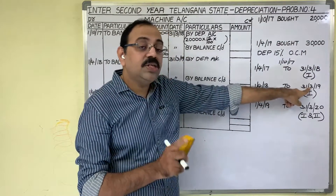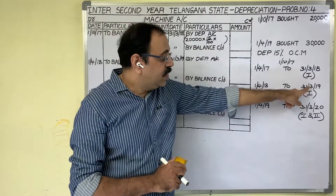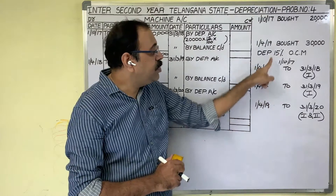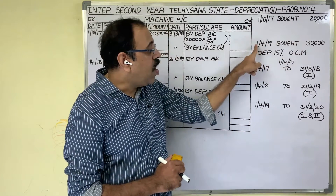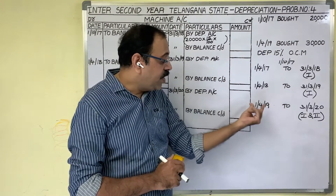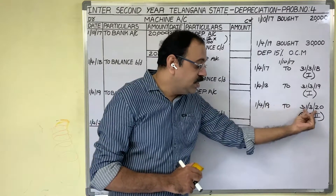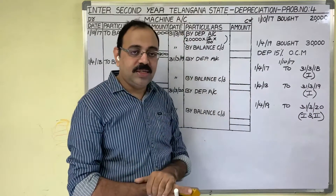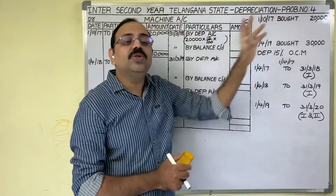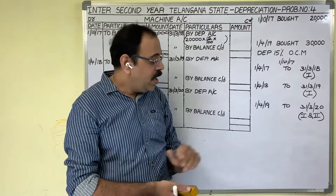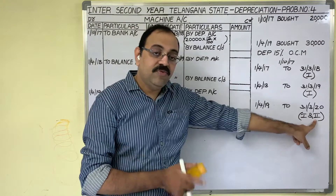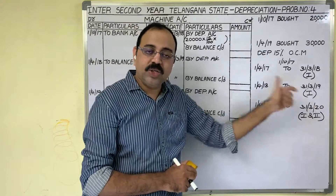If 31st March 2019 is the last date of the 2nd year, then the 3rd year starting date becomes 1st April 2019. They purchase the 30,000 rupees worth asset on 1st April 2019. So in the 3rd year from that date to 31st March 2020, they used 2 assets — the 20,000 rupees worth asset and the 30,000 rupees worth asset. At the end of the 3rd year we have to provide depreciation on both assets for the full year. Let us do the problem.